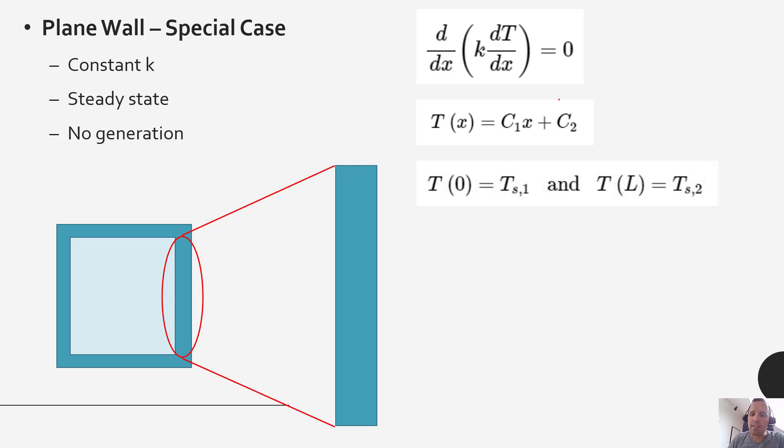So adding in the boundary conditions, we have constant surface temperature boundary conditions. We could use those boundary conditions to solve for C1 and C2. We end up with a more specific form of the temperature profile in this particular instance that says that our temperature as a function of x is equal to the overall temperature difference, where we'd have T_s,2 minus T_s,1.